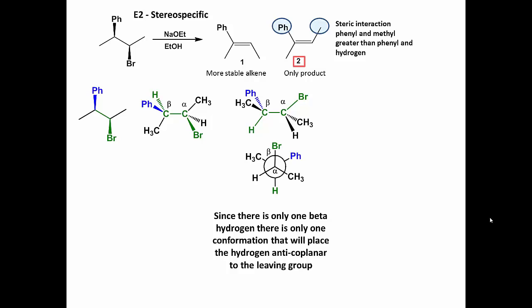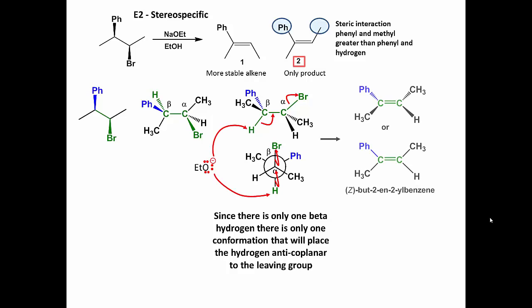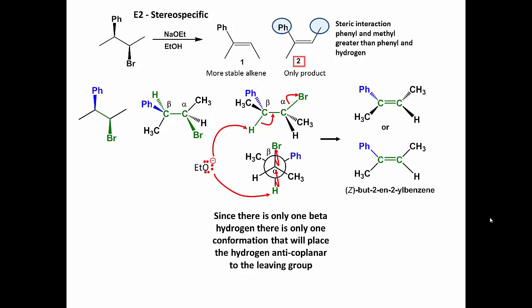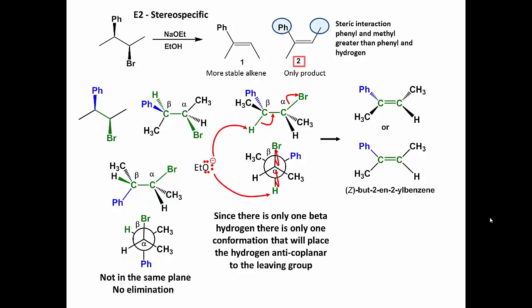The ethoxide ion removes the only beta proton to produce the less stable Z alkene. Notice that the E alkene cannot form because the conformation that would produce the more stable E alkene does not have a beta proton anti-coplanar. An elimination reaction cannot occur in this conformation.